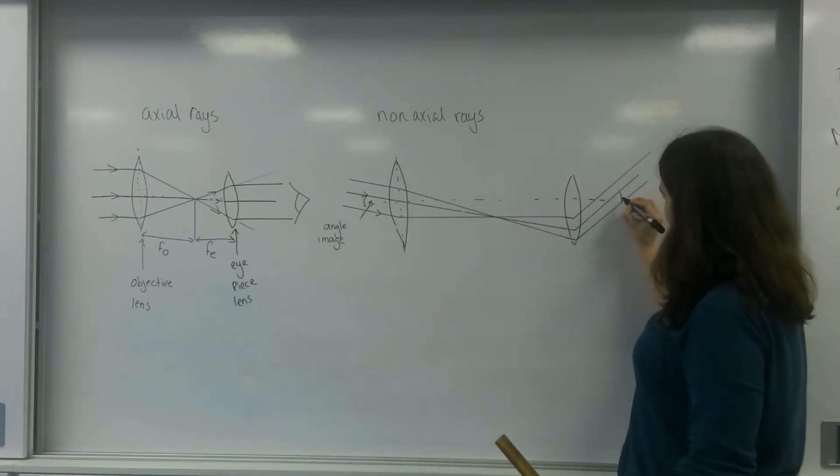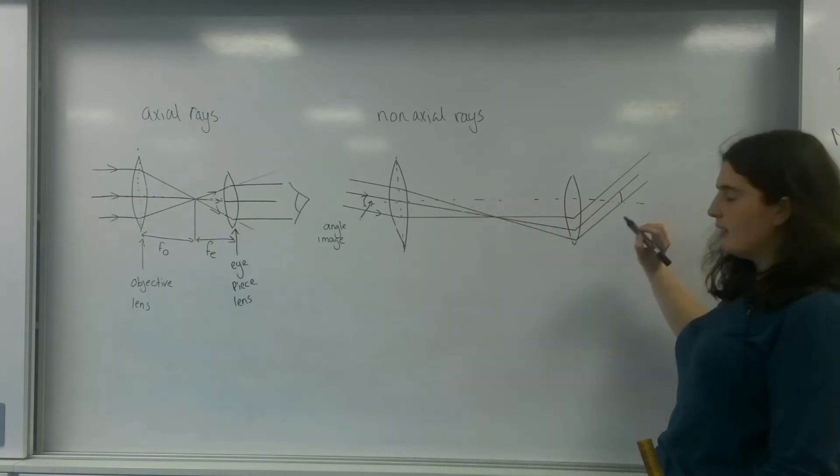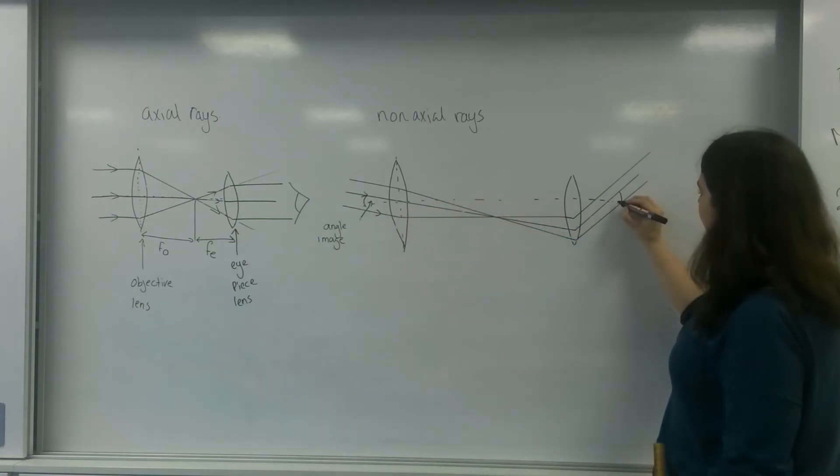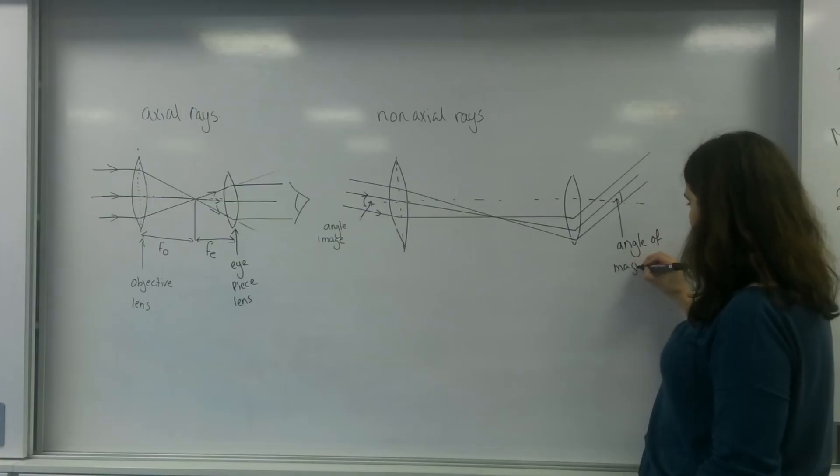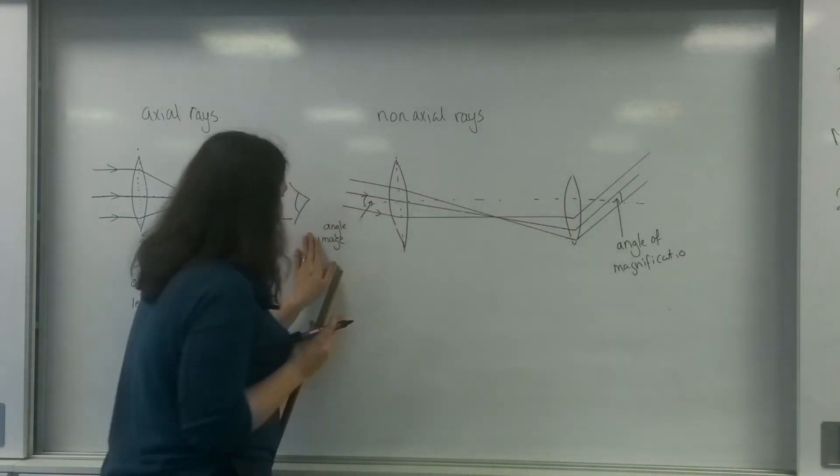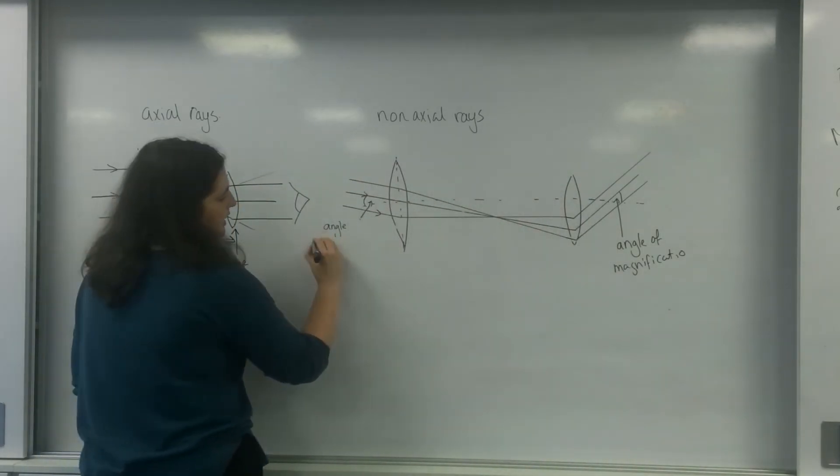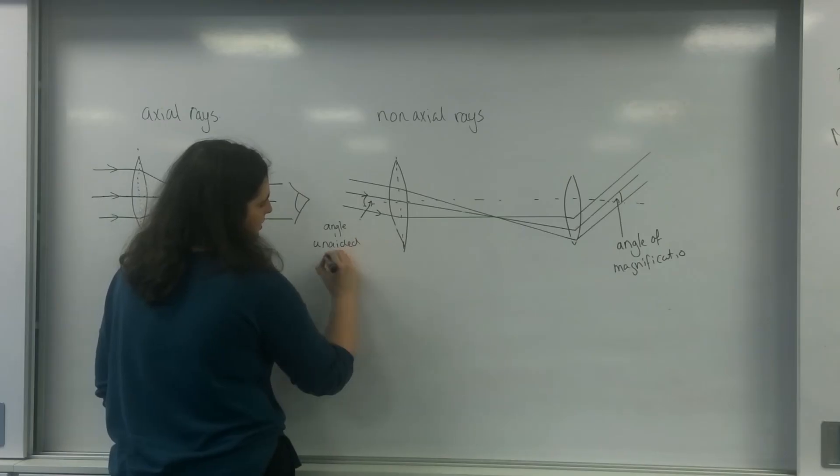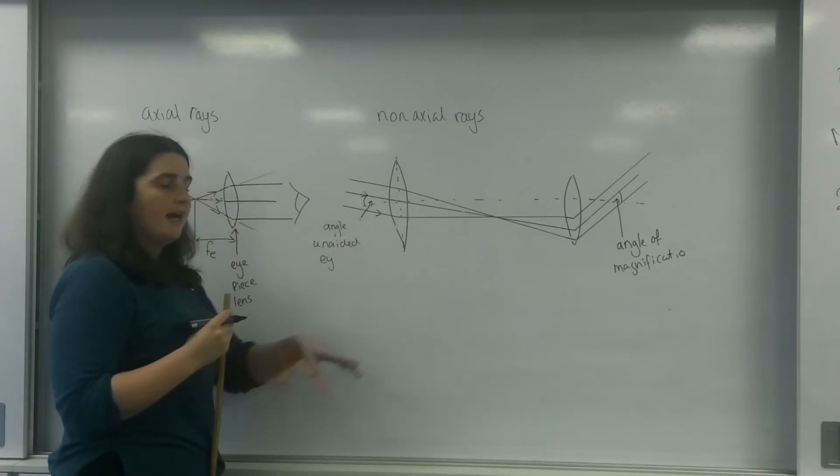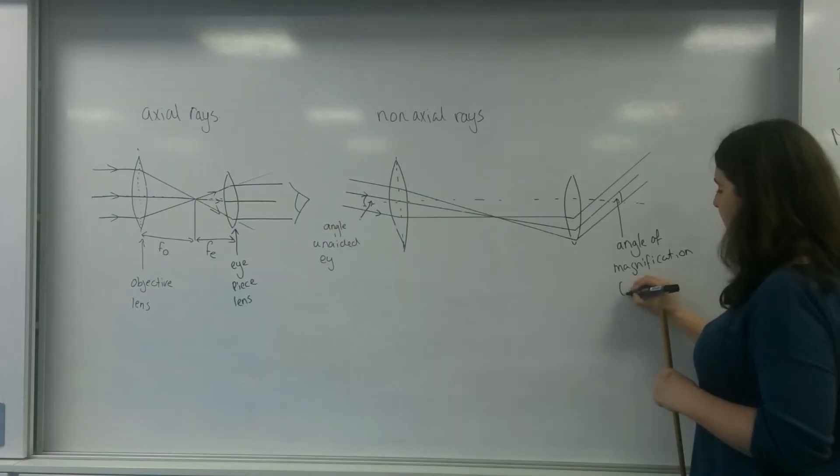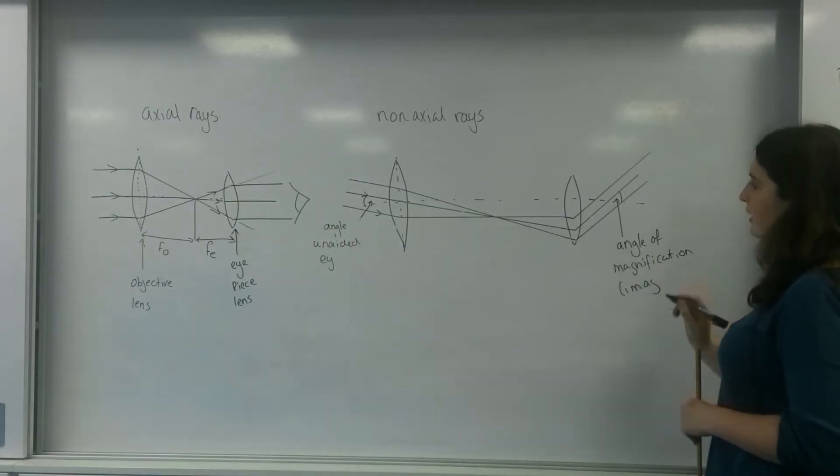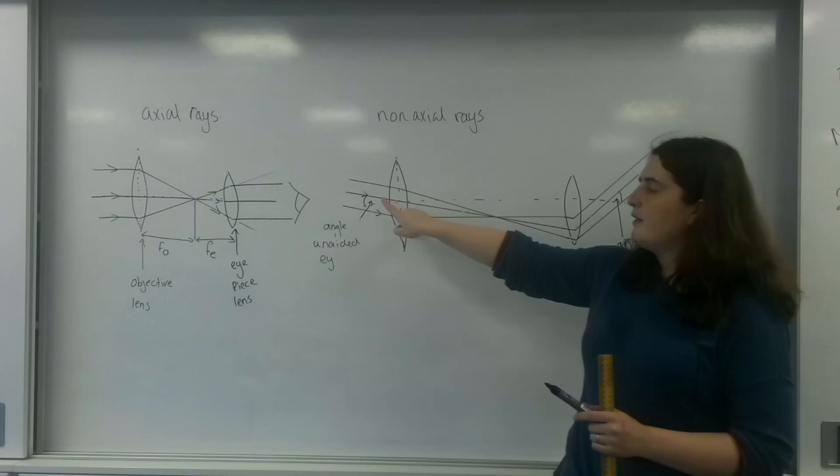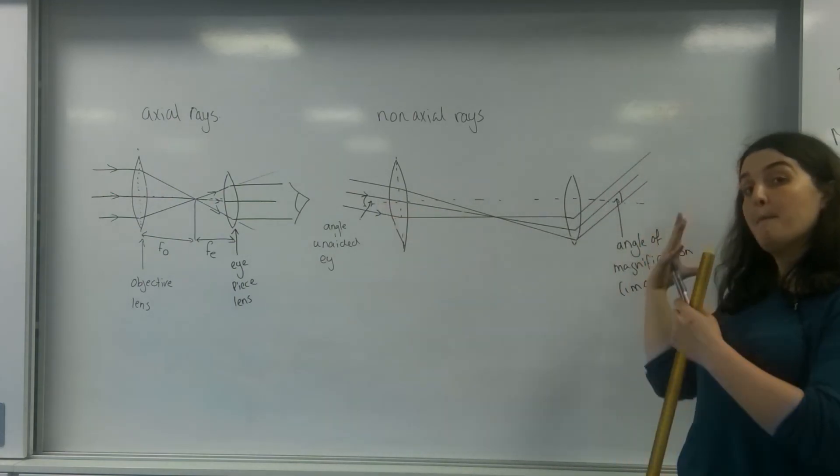These are then refracted to the eye like this. This angle here between the axis for the optical center, that is the angle of magnification. I do apologize, it's not the angle of the image. This is the angle of the unaided eye, and this is the angle of magnification or that of the image because this is what you're going to see. As you can see, this angle is much bigger than this angle here, so it has been magnified.